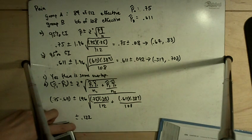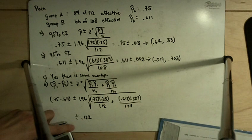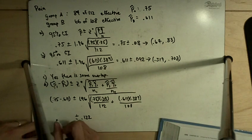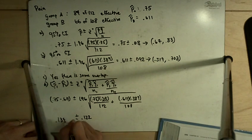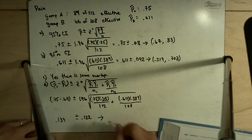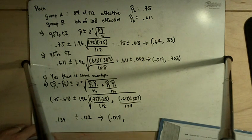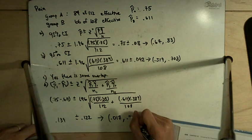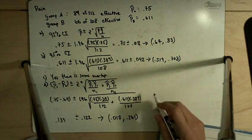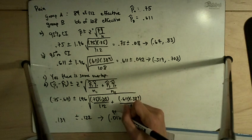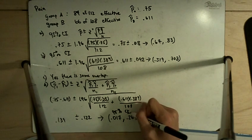And then get plus or minus 0.122. And over here, I have 0.75 minus 0.611, 0.139. So my confidence interval minus 0.122 gives me 0.017 on the lower end to 0.261. So that's my 95% confidence interval for the difference.